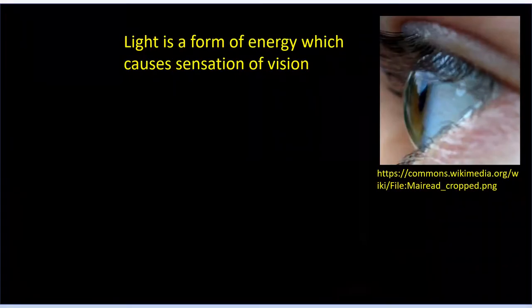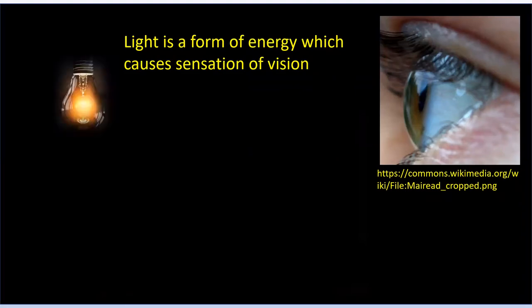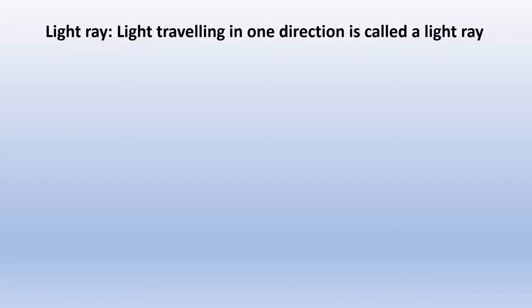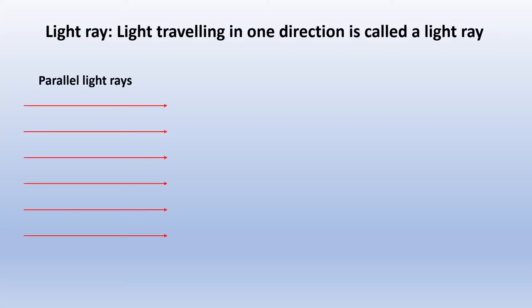Light is a form of energy which causes sensation of vision. If there is any source of light, then the light from the source falls on the objects and then it gets reflected into our eyes and we will be able to see the objects. Light travels in straight lines, and light traveling in one direction is called a light ray. If all the light rays are parallel to each other, we call them parallel light rays.